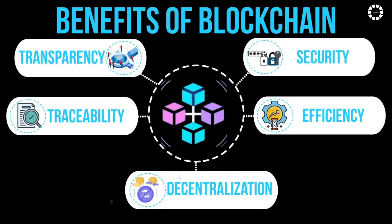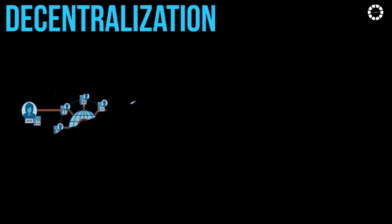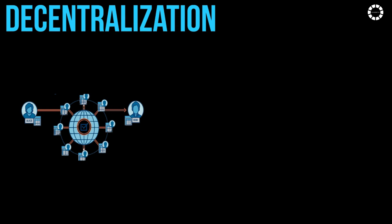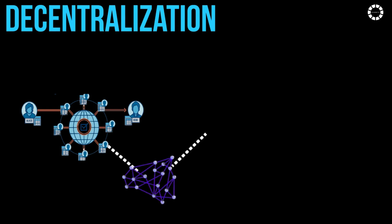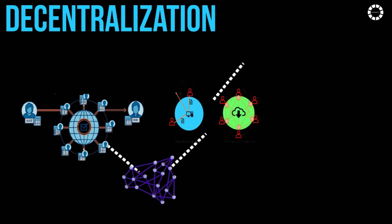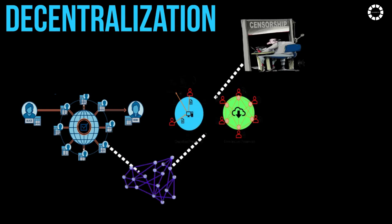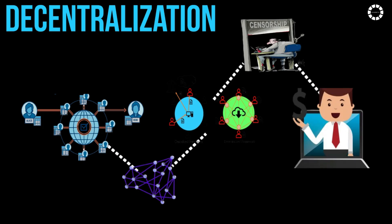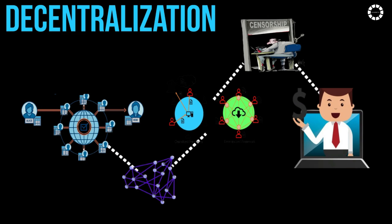Decentralization: Blockchain operates on a decentralized network, eliminating the need for a central authority or intermediary, thereby reducing the risk of single points of failure and increasing resilience against censorship or control by any single entity.